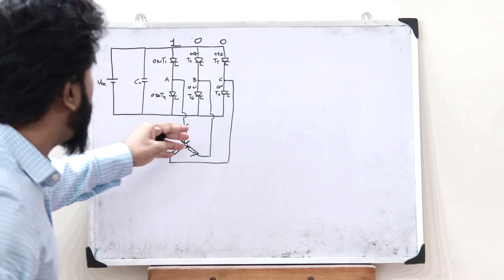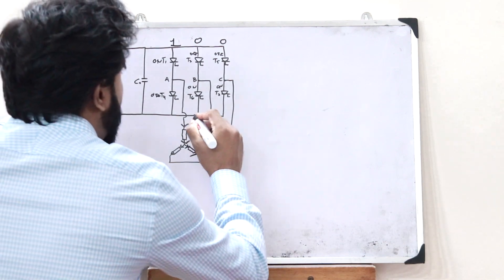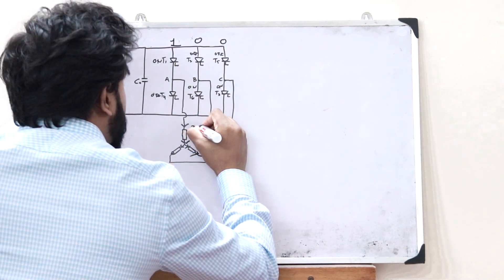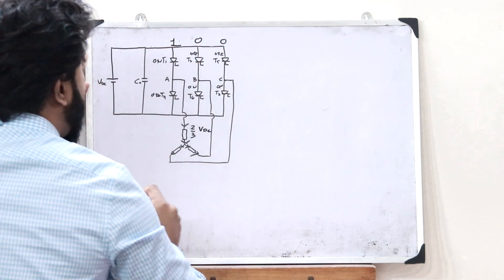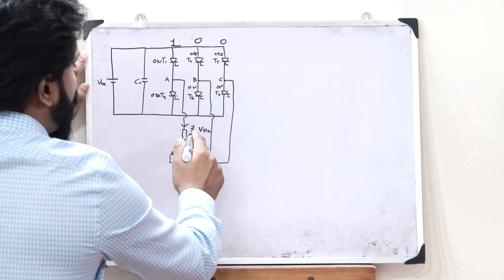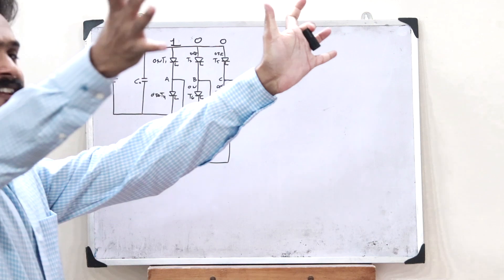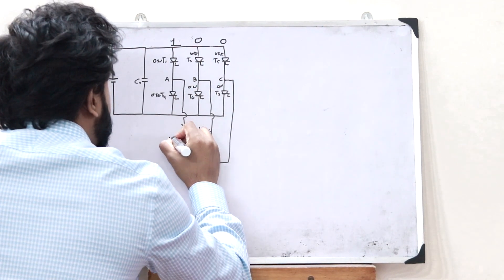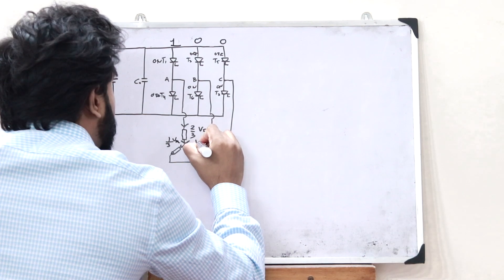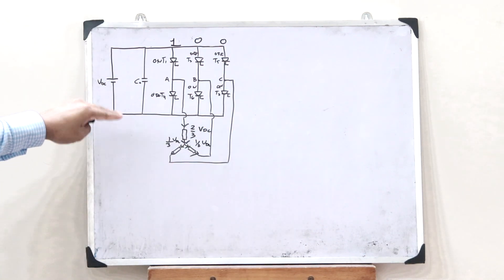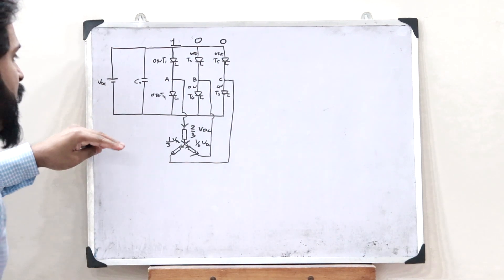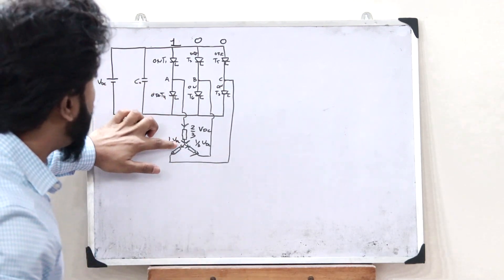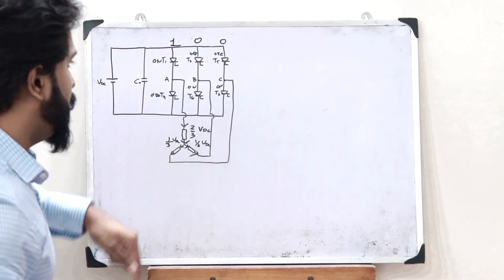As this is a voltage divider circuit, we will have 2/3 of the DC voltage VDC here, and this 2/3 VDC gets split into two equal halves — 1/3 VDC and 1/3 VDC. So 2/3 of the voltage comes in and splits into 1/3 VDC and 1/3 VDC.